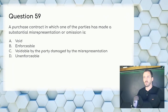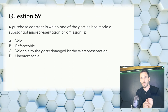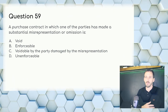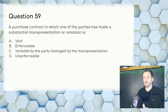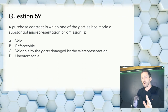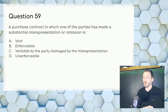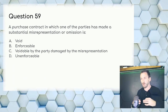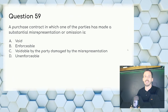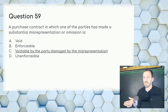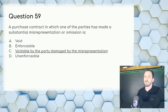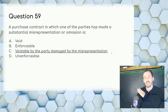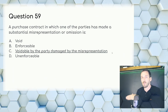Question 59: A purchase contract in which one of the parties has made a substantial misrepresentation or omission — if one party breaks the rules, the contract is not void, which wouldn't be fair to the other party following the rules. Know the difference: void means it is canceled entirely, while voidable means it is able to be voided by the aggrieved party. Answer: C — voidable by the party damaged by the misrepresentation.